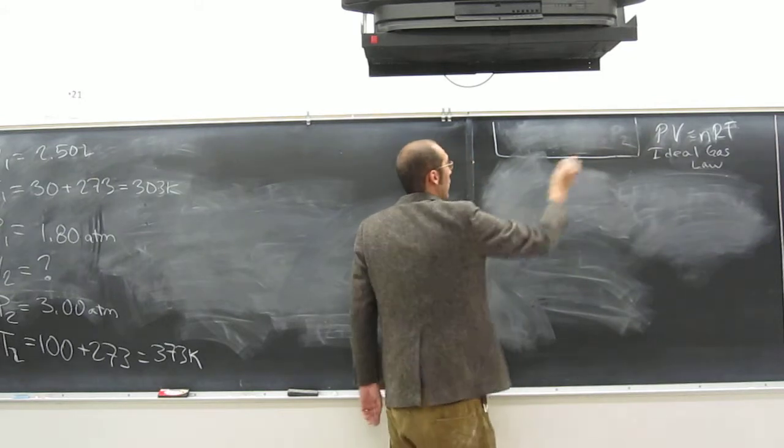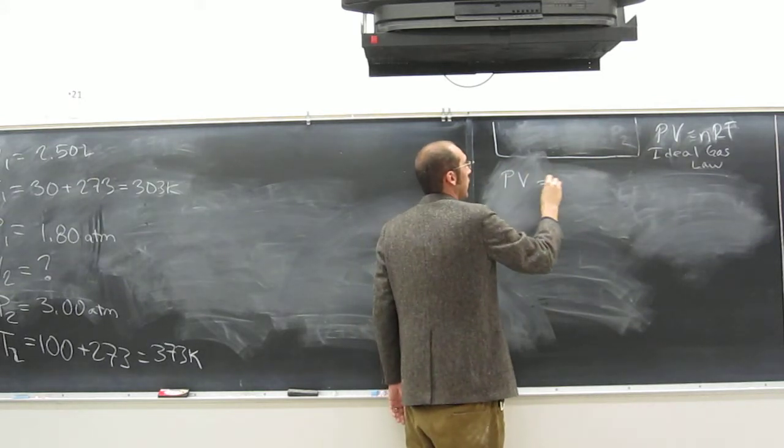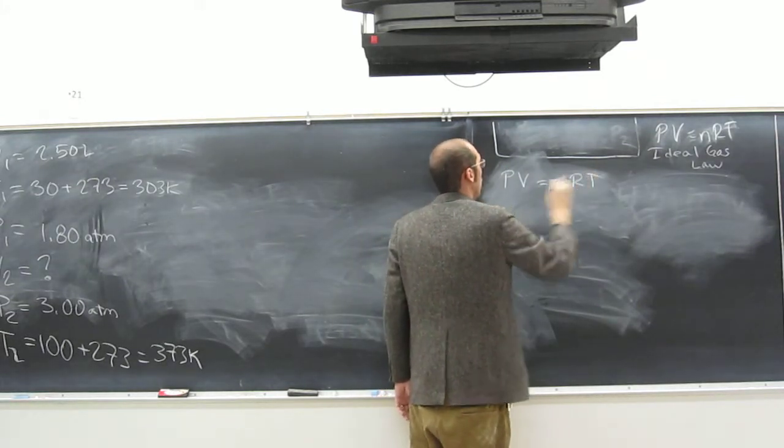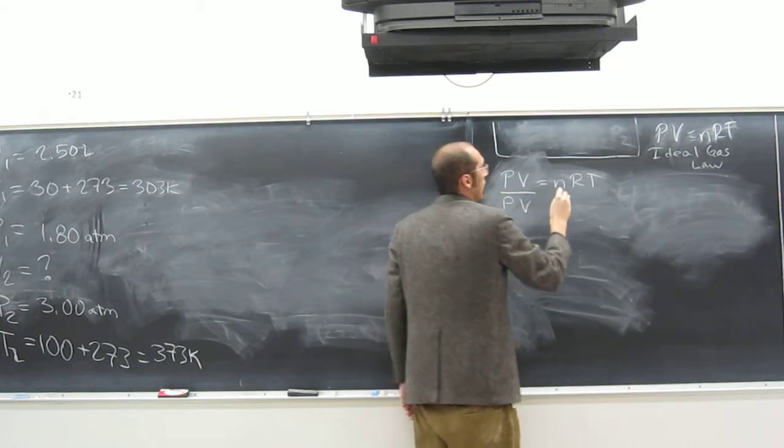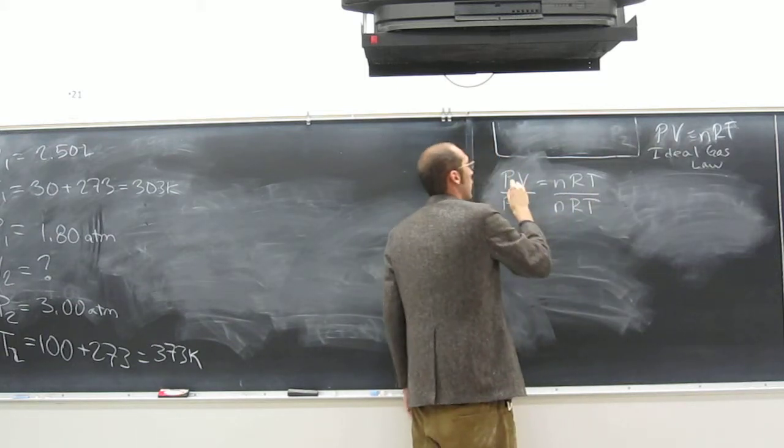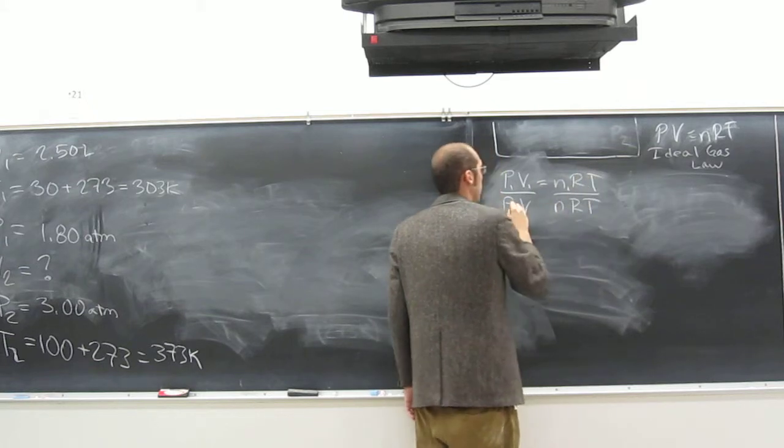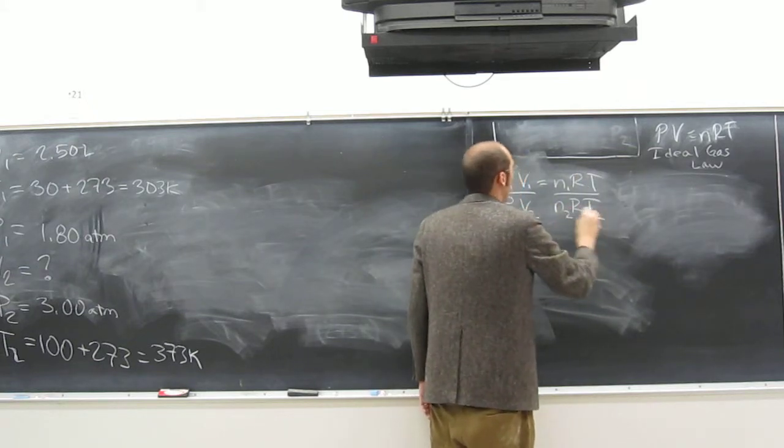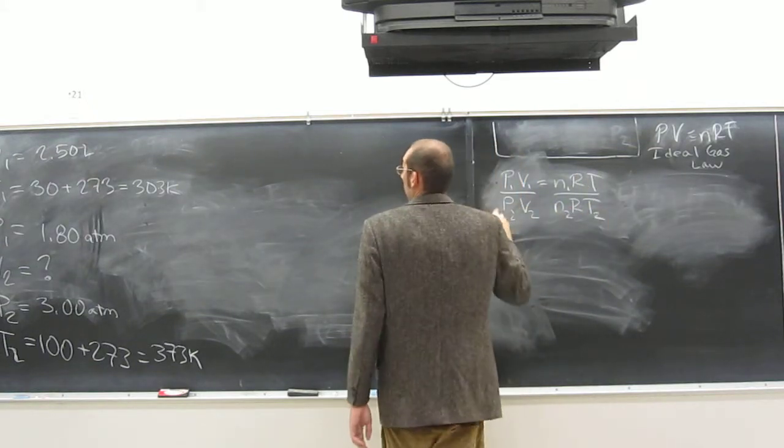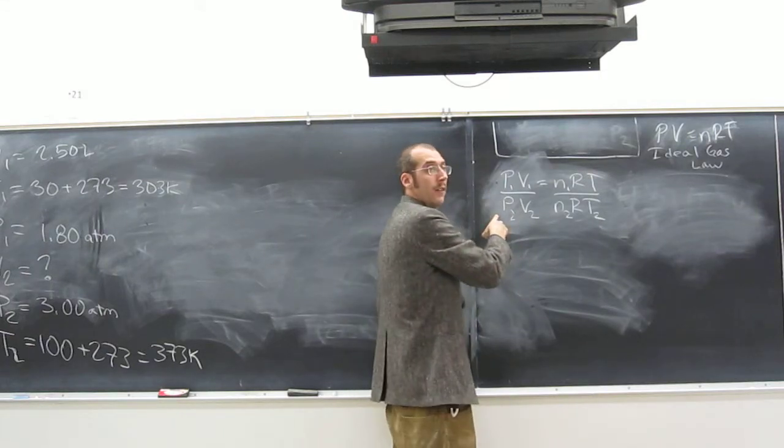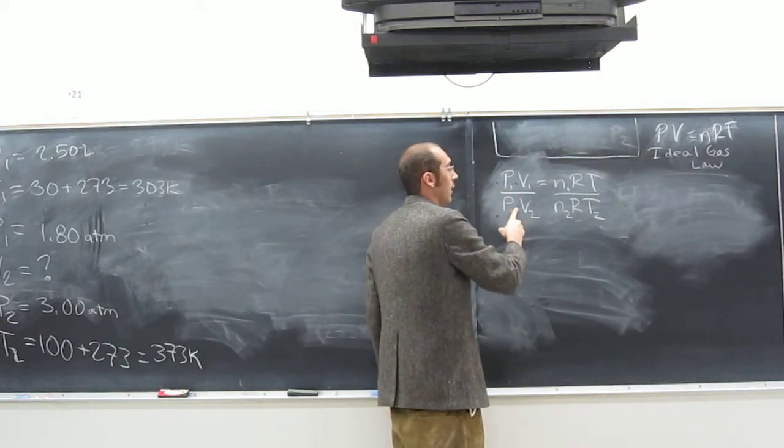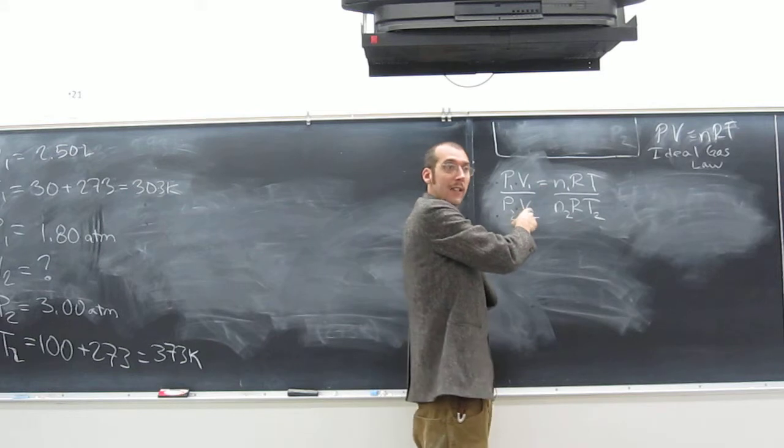So let's do it how we normally do it. PV equals nRT divided by PV equals nRT. We're going to put 1s at the top, 2s at the bottom, right? Did P change? Yes, so we're going to leave that. Did V change? Yes, so we're going to leave that.